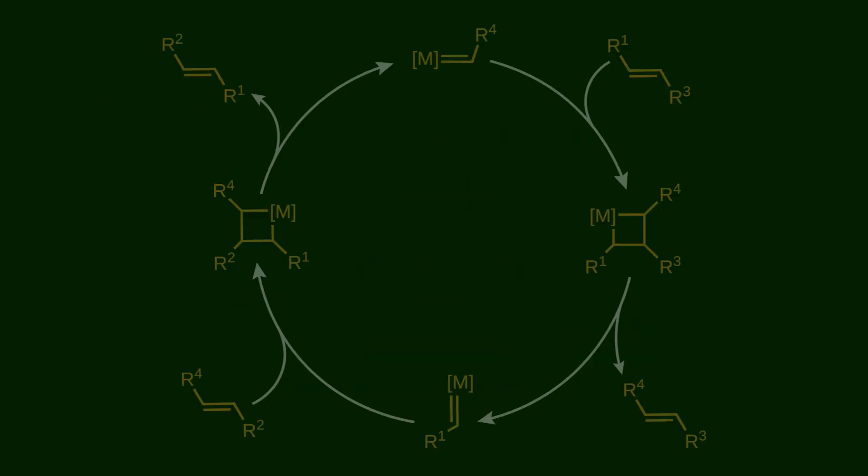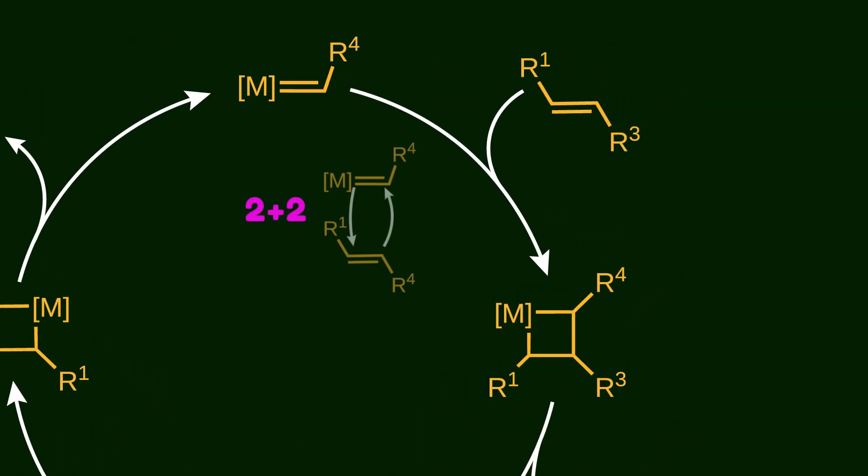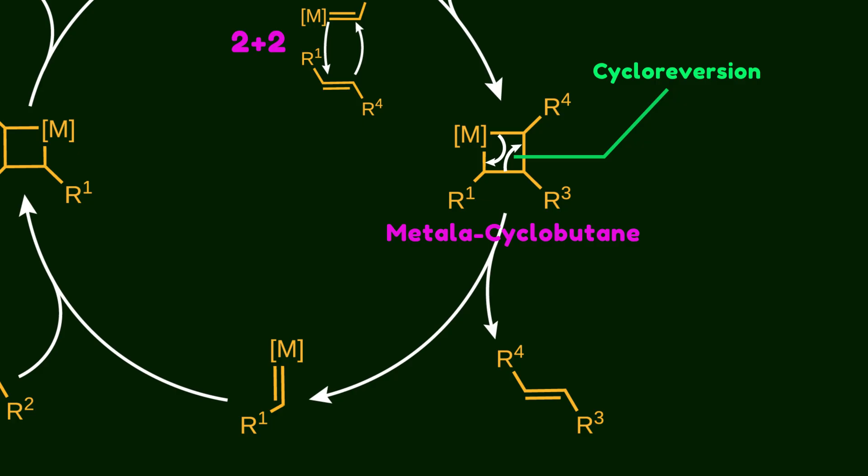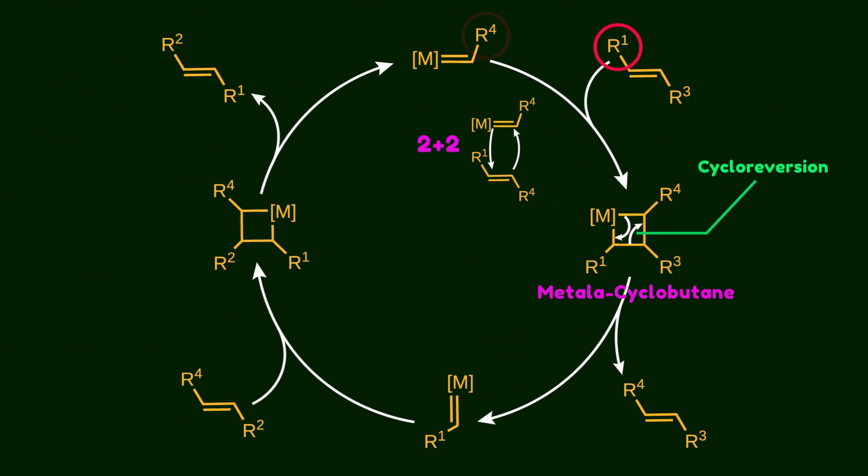Mechanistically, a metal-alkylidene complex reacts with an olefin via a 2+2 cycloaddition reaction to produce a metallacyclobutane. After that, it undergoes a 2+2 cycloreversion to form a new metal-alkylidene complex. What happens here is that R1 and R4 substituents switch positions.